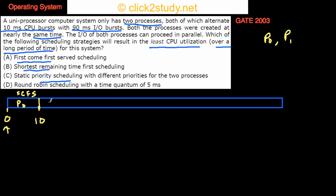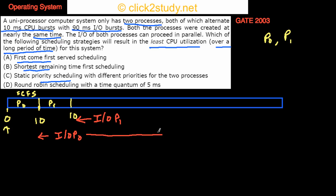P0 runs on CPU and then starts its IO. The CPU gets P1 for another 10 milliseconds. Just after P0 finishes, the IO for P0 has already started. After P1 is done, IO for P1 starts, and these IOs can run in parallel. This IO goes on for 90 milliseconds, so if IO started here it goes on up till 100 milliseconds.